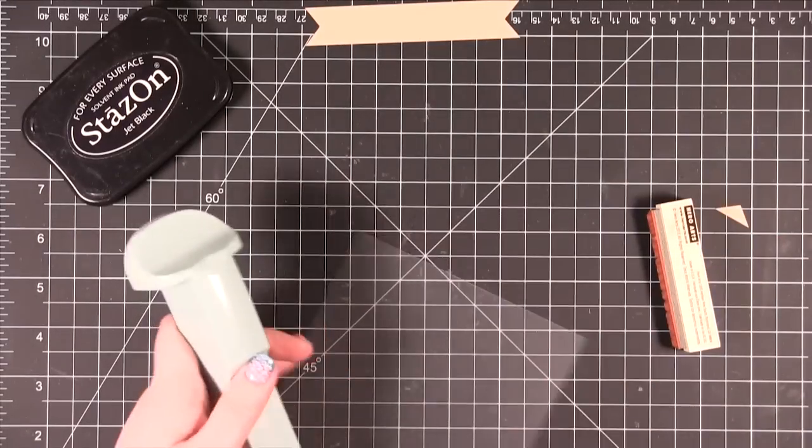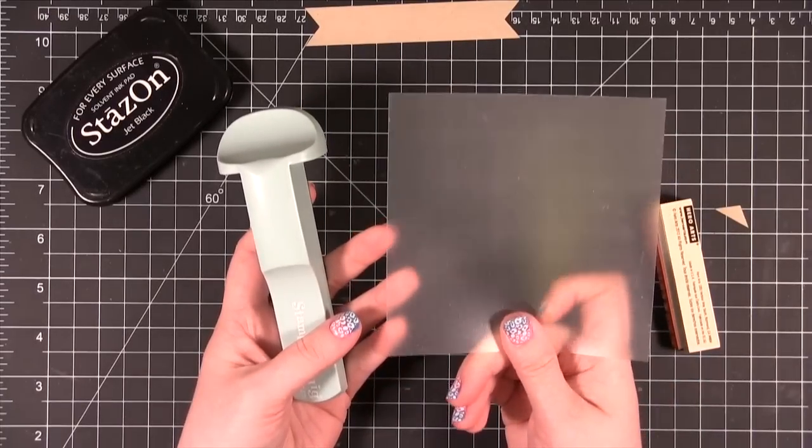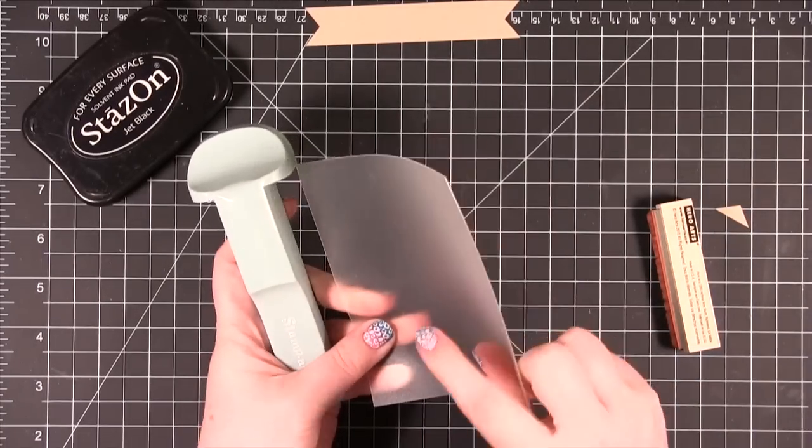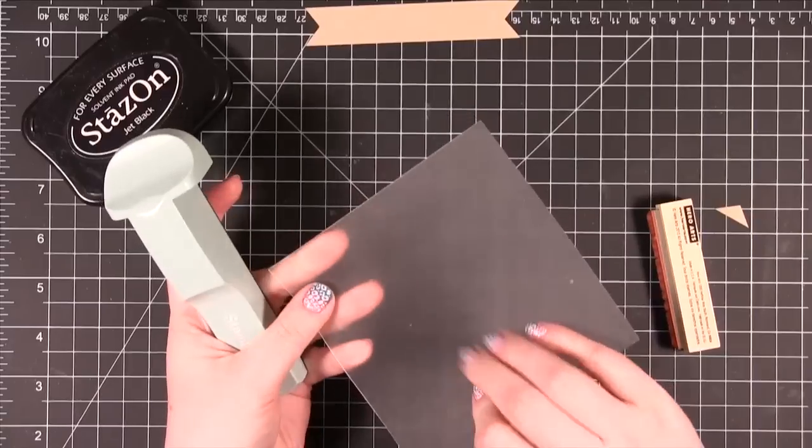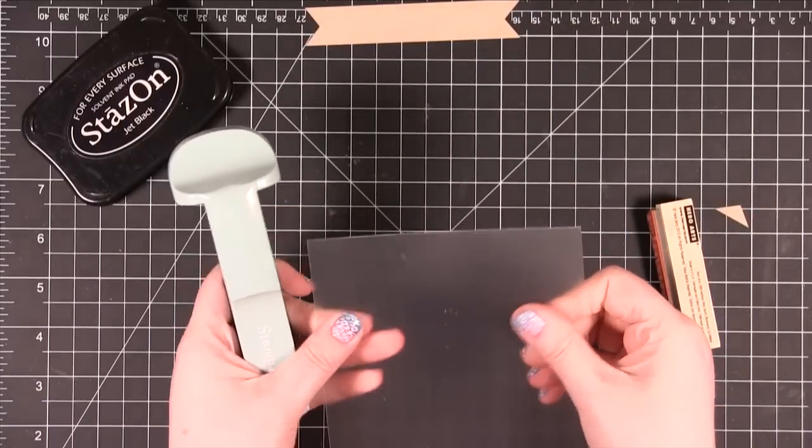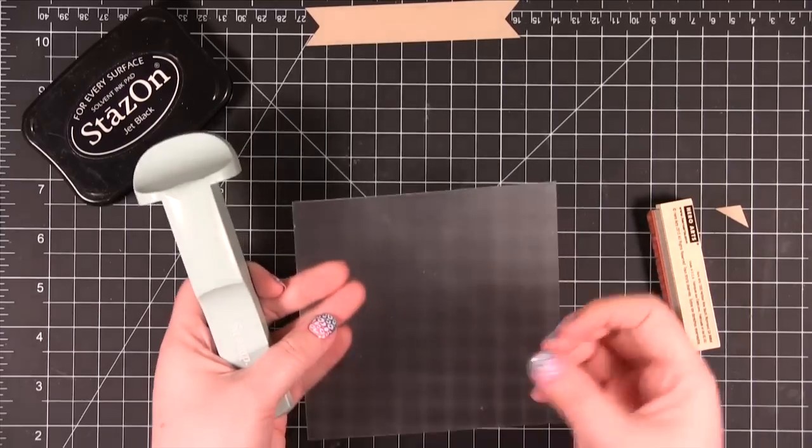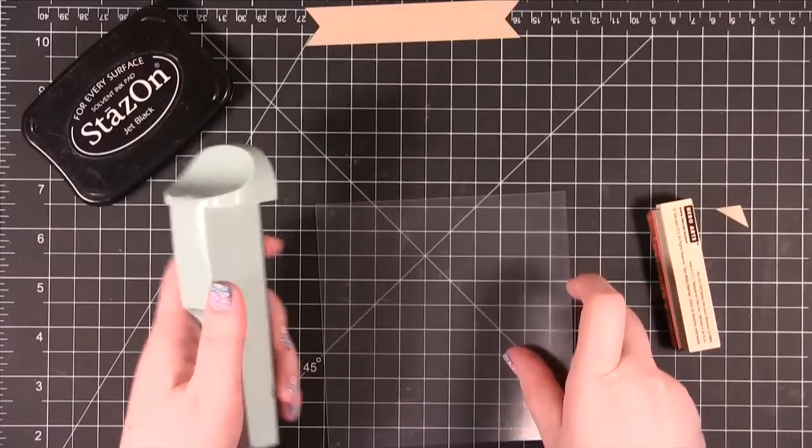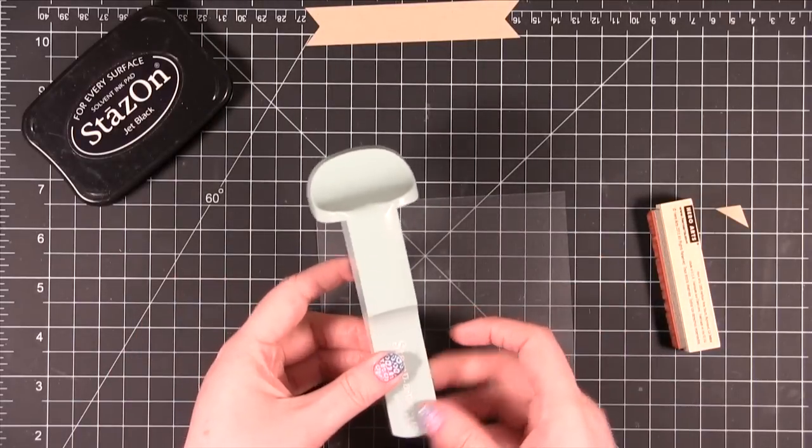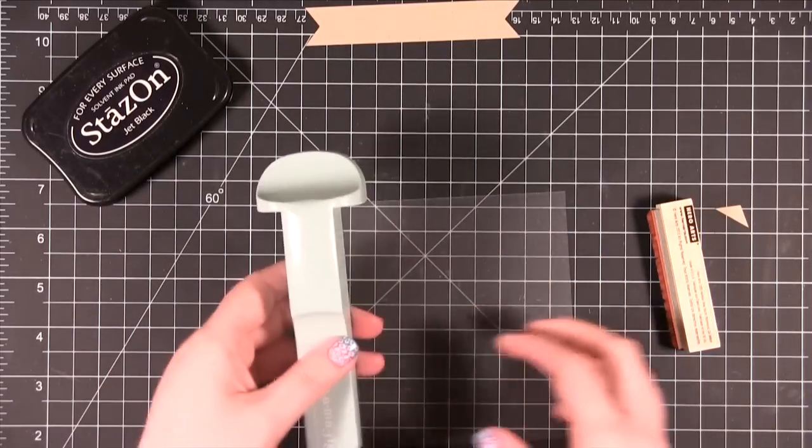So the Stampamajig has two pieces when you buy it. You have the imaging sheet which is this clear kind of heavy plastic. One side is smooth and the other side has a little bit of a grip to it. It's a little more matte. You're going to want to stamp on the matte side because it'll catch the ink a little bit better. And then there's this piece right here which is the T-square which is actually the positioner part of the whole thing.